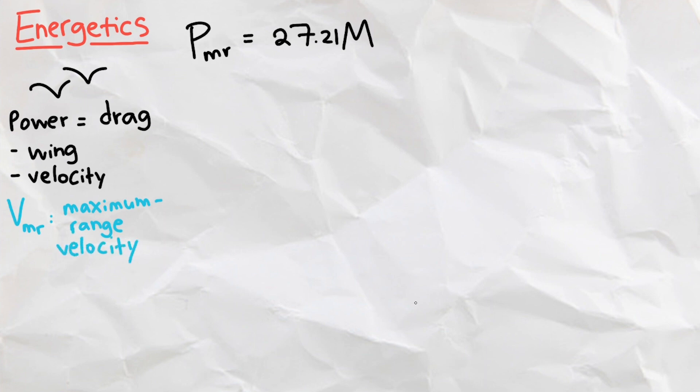And luckily, according to literature, an equation has been found for the power needed to travel at this velocity, which is as follows, where B is the wingspan in meters, S is the wing area in square meters, and M is the mass of the bird.